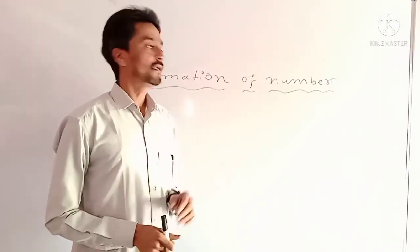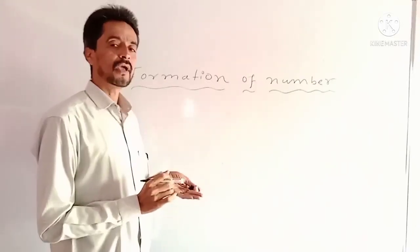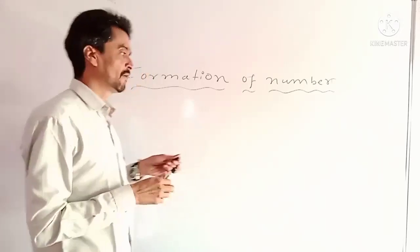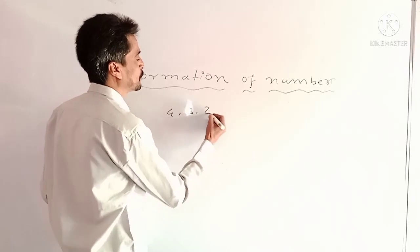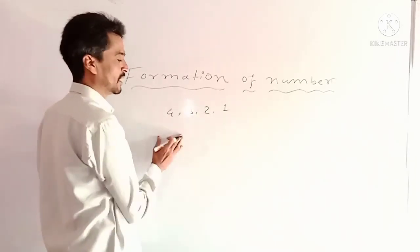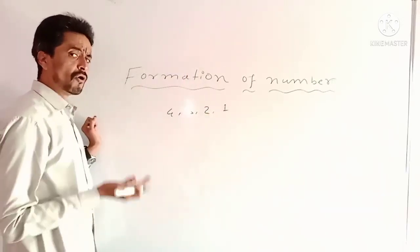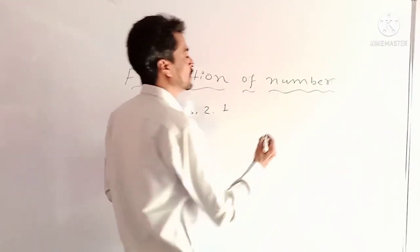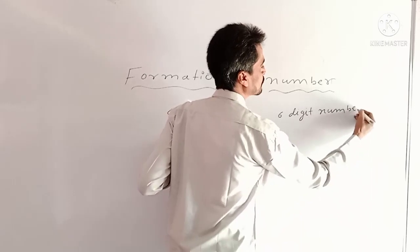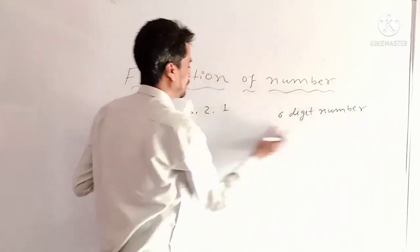Another basic point is the formation of a number when we have fewer digits but need to form a number with more digits. For example, given digits are 4, 3, 2 and 1 — only 4 digits — but we need to make a 6-digit number. So when forming the smallest 6-digit number using these given digits, I am drawing 6 boxes because we need to form a 6-digit number.